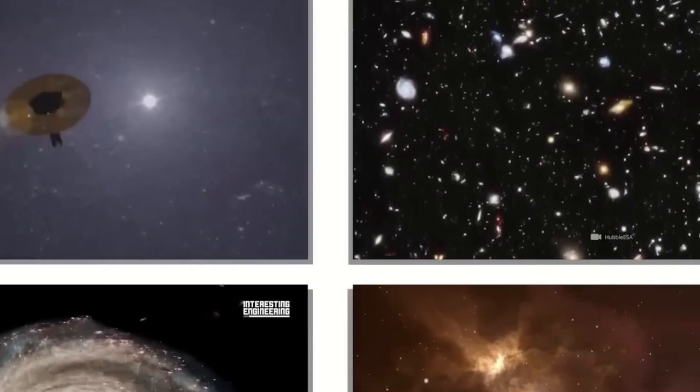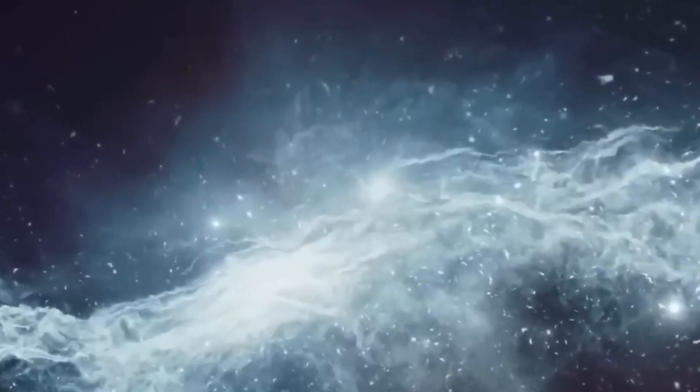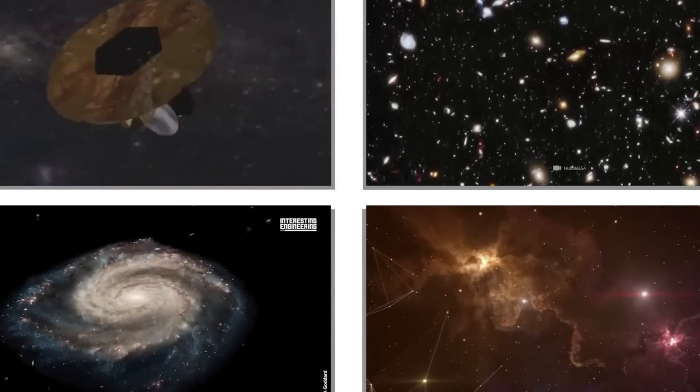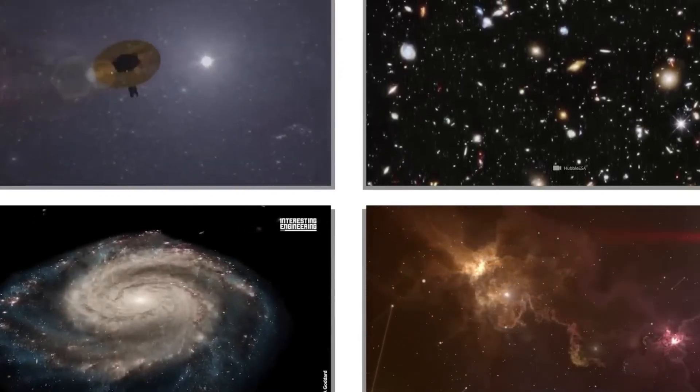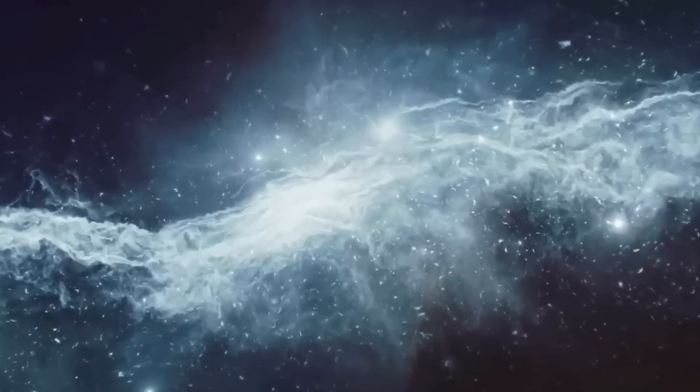The James Webb Space Telescope has been used by astronomers to go back in time to the early cosmos, and they have discovered an unexpected object. Six huge galaxies that existed between 500 million and 700 million years after the Big Bang were discovered by the satellite observatory, according to a new study released in the journal Nature.